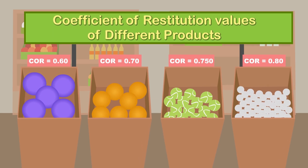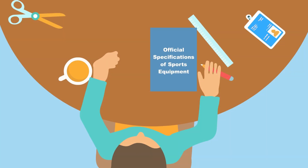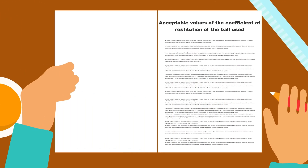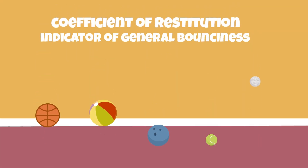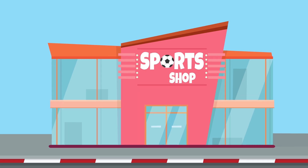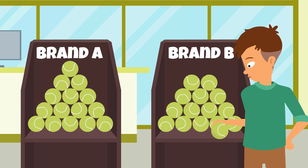Sports equipment companies pay a lot of attention to the coefficient of restitution of their products that are supposed to bounce or be physically deformed in some way or another. In fact, sporting authorities in some countries even specify an acceptable value range for the coefficient of restitution of balls and other sporting equipment. All in all, the coefficient of restitution is an indicator of the general bounciness, or elasticity of an object. Therefore, next time you find yourself conflicted about choosing between two brands of tennis balls at a sports shop, check their coefficient of restitution values, and you will be able to make a better, bouncier decision.